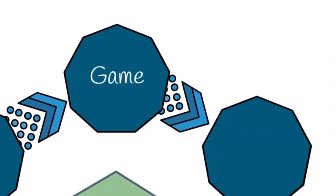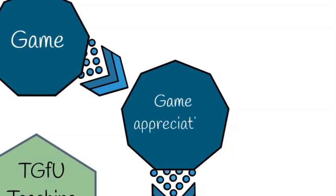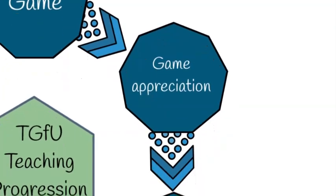The second step is game appreciation. As students begin to play the game, they also learn about the nature of the game. At this stage, draw attention to the aim of the game, how points are scored, and what the playing boundaries and rules are. Remember that games are shaped by their rules, so understanding these provides the structure within which strategy and tactics can be applied.